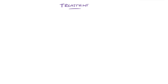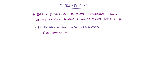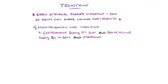Treatment involves early initiation of empirical antibiotic therapy, as even days of treatment delay can result in impaired longer-term fertility. In milder cases where hospitalisation is not needed, one first-line option includes ceftriaxone 500mg intramuscularly as a single dose, doxycycline 100mg orally twice a day for 14 days, and metronidazole 400mg orally twice a day for 14 days.